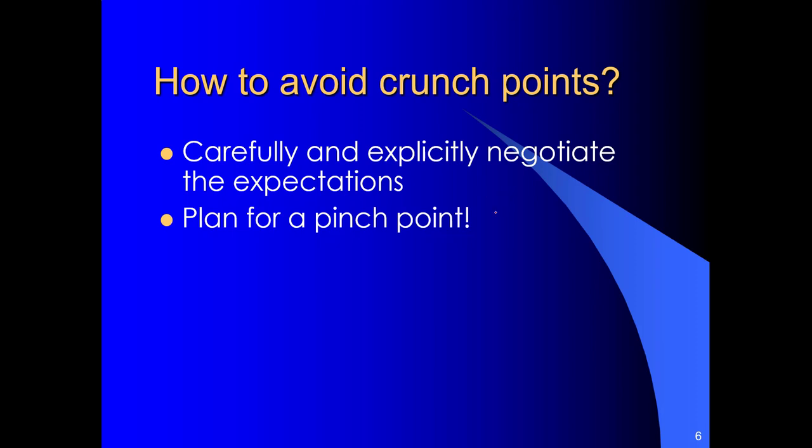So how do we avoid the crunch points? How do we avoid getting into the really bad part of the end of the flow chart? Well, first off, you need to carefully and explicitly negotiate the expectations. You have to share what your expectations are. You have to listen to what the expectations are. And then you have to negotiate them and come to an agreement, a formal agreement, about what the class or what the job will look like. And then you need to formally, and again, all this is formal, you need to formally plan for pinch points.